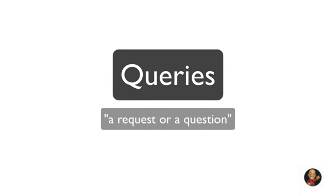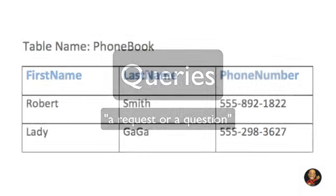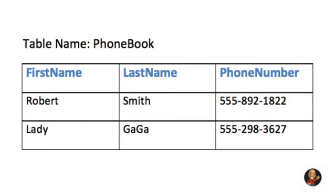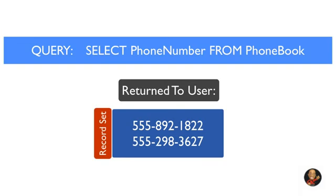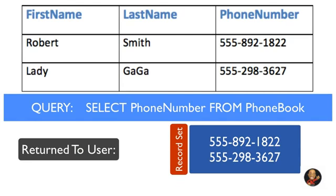Moving on, let's get into what is called queries. A query is simply a request or a question. In MySQL we can request from a database, or in other words query a database, for specific information and have a record set returned. For example, if I wanted to display all my personal contacts within our table called phone book, I may use the following query. This query would return all the phone numbers from the table called phone book and display the following record set. We will get more into queries in the following tutorials, but the main concept here is what a query is and what it does. A query allows us to request or grab information from a database and perform different operations with the data inside our table or tables.